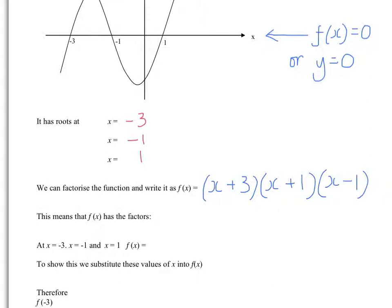Thinking back to what we did with quadratics, it's the same that applies to cubics and other polynomials. So this is going to be a plus 3, a plus 1, and a minus 1. That ties in with transformations of curves — on the first part you're looking at your original y equals x cubed, and it's been translated by minus 3, translated by minus 1, translated by 1. So the three factors are x plus 3, x plus 1, and x minus 1. That's it fully factorised.